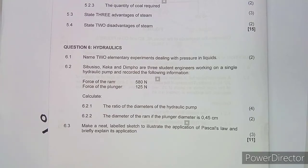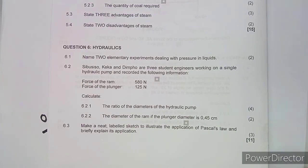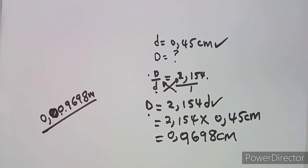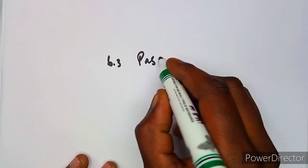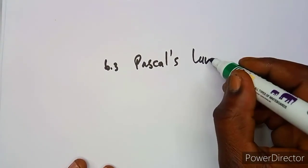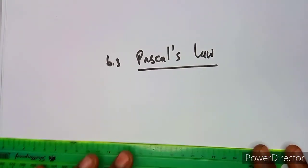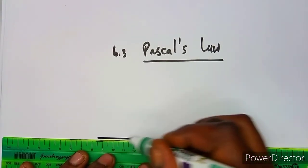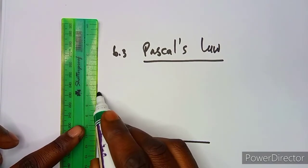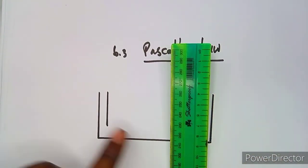On 6.3, we are asked to make a neat labelled sketch to illustrate the application of Pascal's law and briefly explain its application. It's not just about the diagram — you also need to provide an explanation. So we need to show and describe Pascal's law.